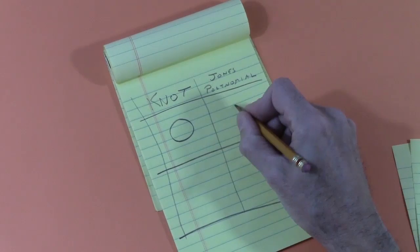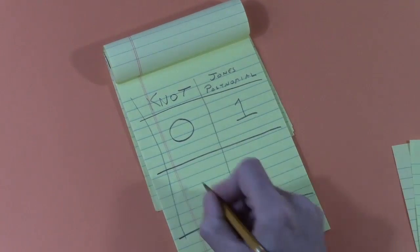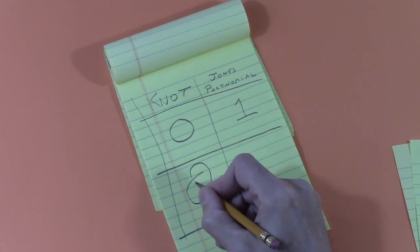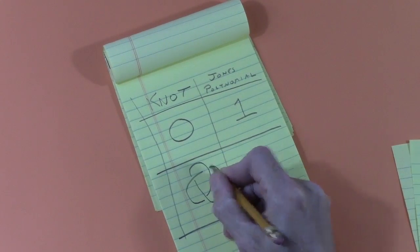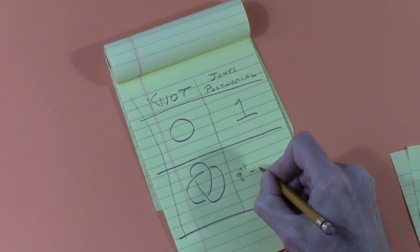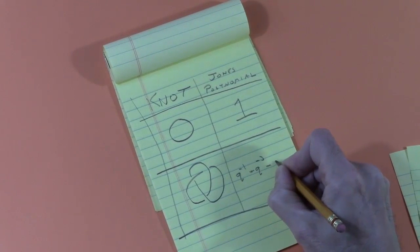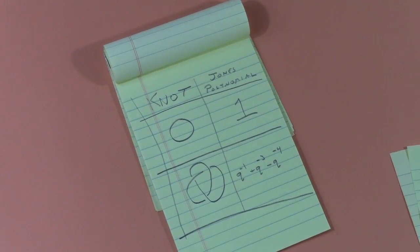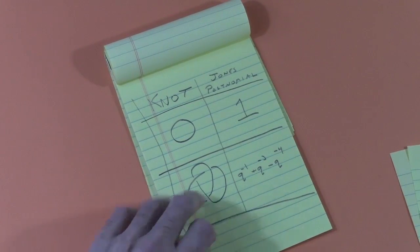For a simple loop, the polynomial is just 1. For the trefoil knot, it turns out the polynomial is q to the minus 1 plus q to the minus 3 minus q to the minus 4. The exact details don't really matter here. Just the fact that there's a well-accepted theorem that says if two drawings have different Jones polynomials, then it's impossible to manipulate one form into the other. So this sort of formal analysis seems to say it's impossible.